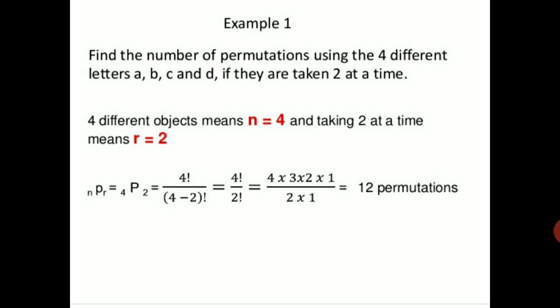Find the number of permutations using 4 different letters A, B, C, and D if they are taken 2 at a time. Here n equals 4 and r equals 2. So 4P2 equals 4 factorial divided by (4 minus 2) factorial. 4 factorial is 4 × 3 × 2 × 1 and 2 factorial is 2 × 1 — these cancel, leaving 4 × 3 equals 12 permutations.